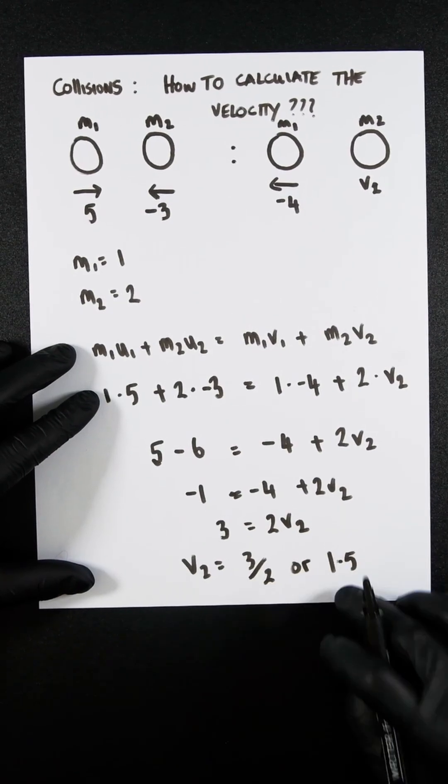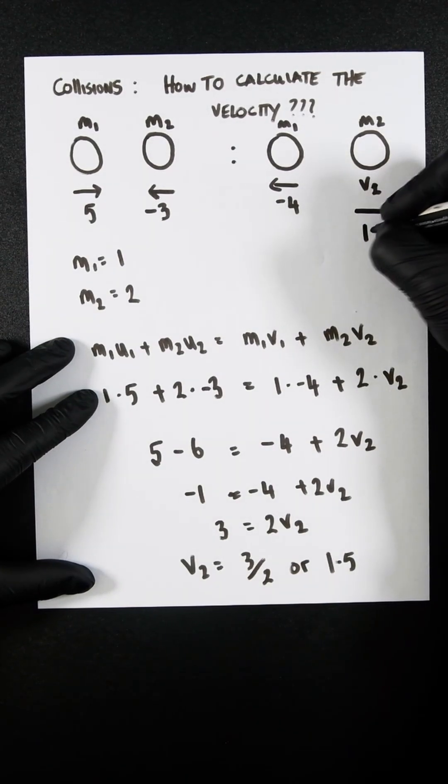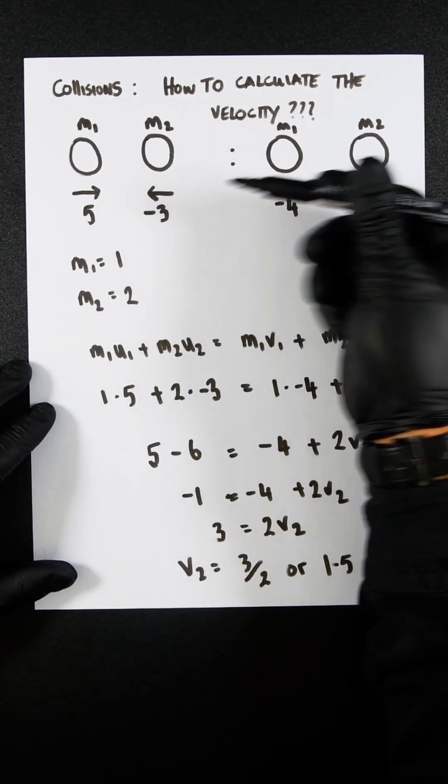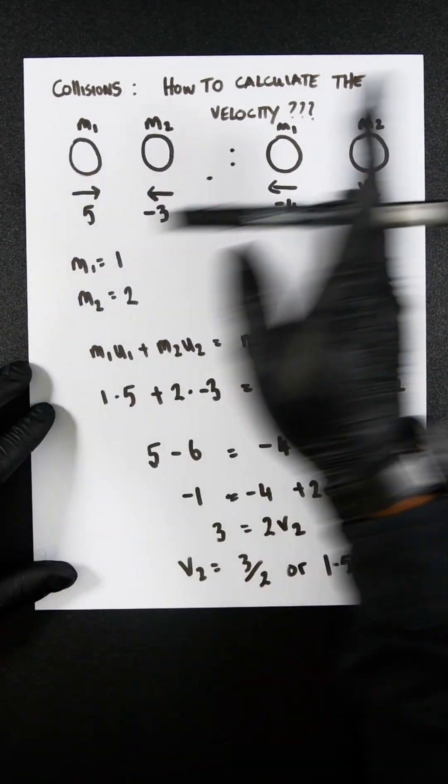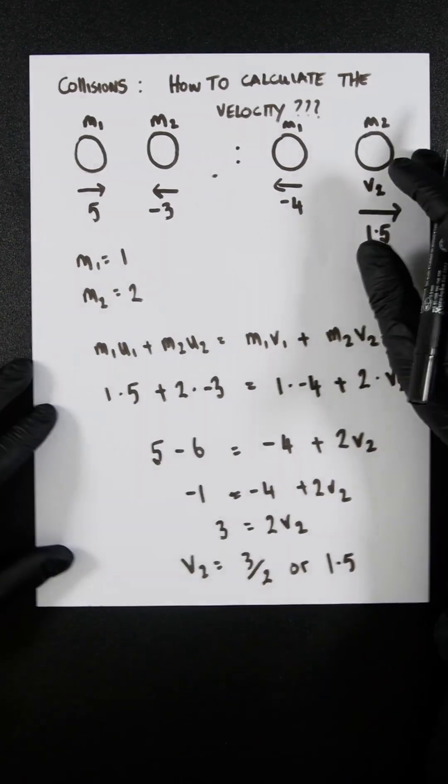And because it is positive, it means it's going to be heading right and not left. So that means when it was going this way, it's now going to go the other way and much slower, half the velocity. Simple.